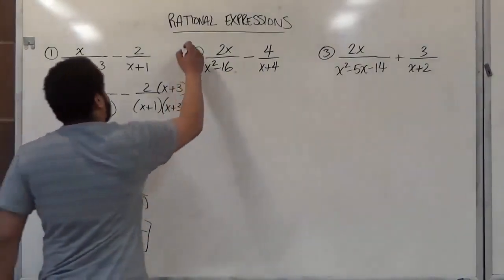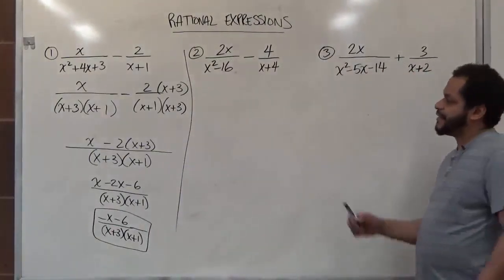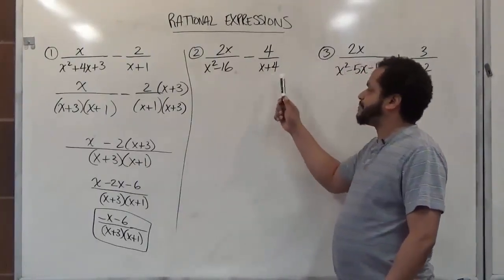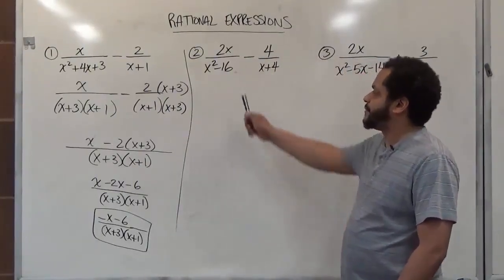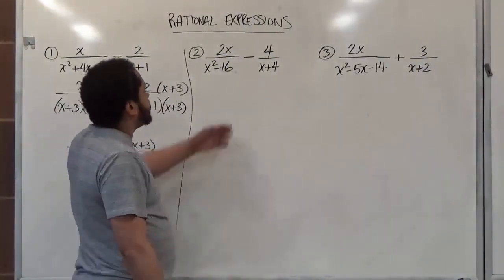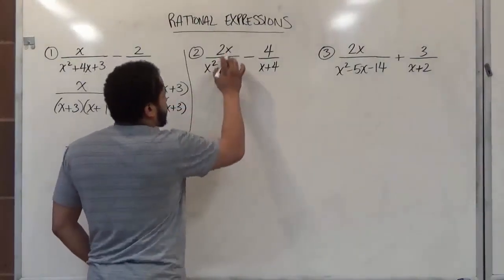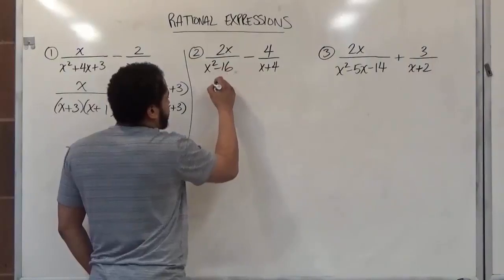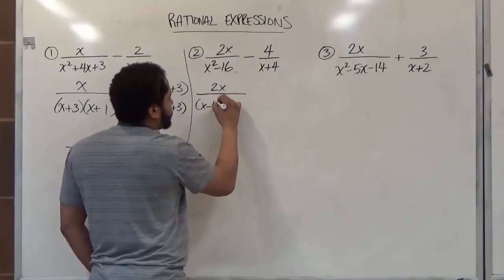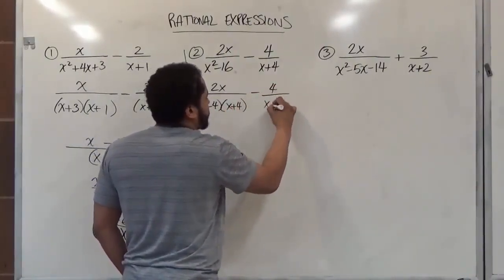In problem two we see we have two x's divided by x squared minus sixteen minus four over x plus four. And here we see we have a difference of two squares. So this would be an easier factoring mechanism. While on the right side we see we have one of the factors of the difference of the two squares. So let's start by factoring the difference of two squares on the left hand side here. We're going to get x minus four, x plus four, and we're subtracting four over x plus four here.